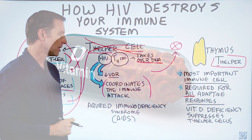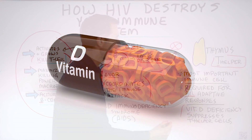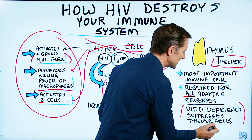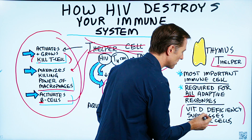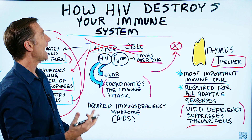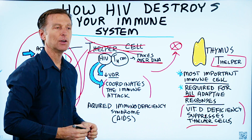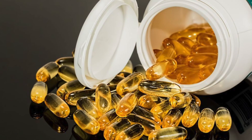I'm talking about vitamin D. If you're deficient in vitamin D, your T helper cells will be suppressed. If someone had AIDS, it would be very smart to take a lot of vitamin D.